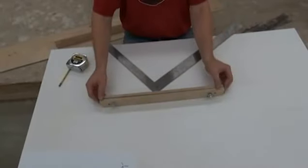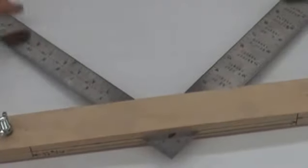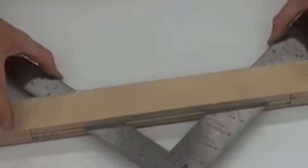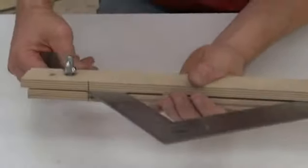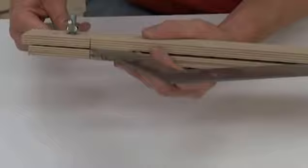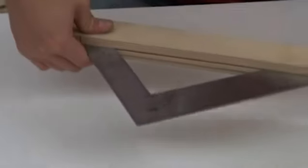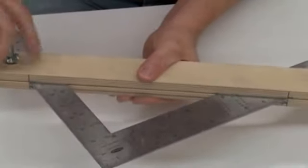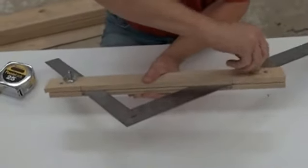I'm going to insert my framing square in between my jig, and then going by my lines that I've drawn on my jig, set my rise, 7 and 9 sixteenths to my line there, and my 10 inches to my run, and clamp it down.